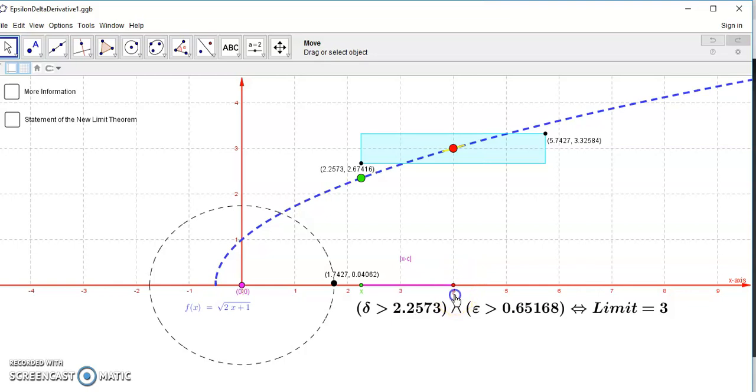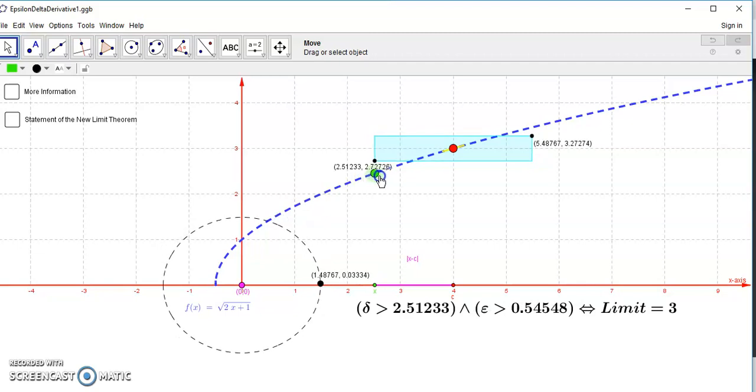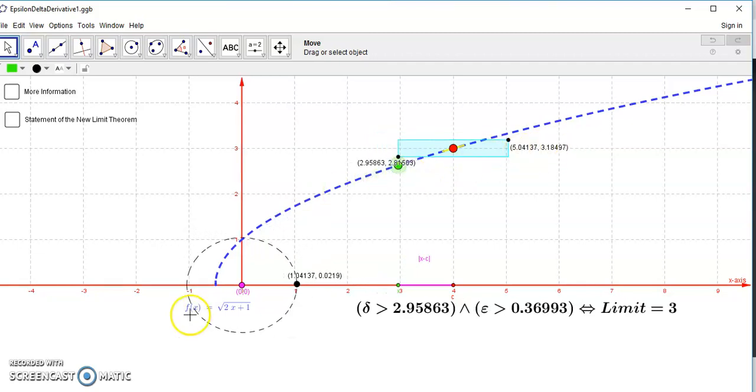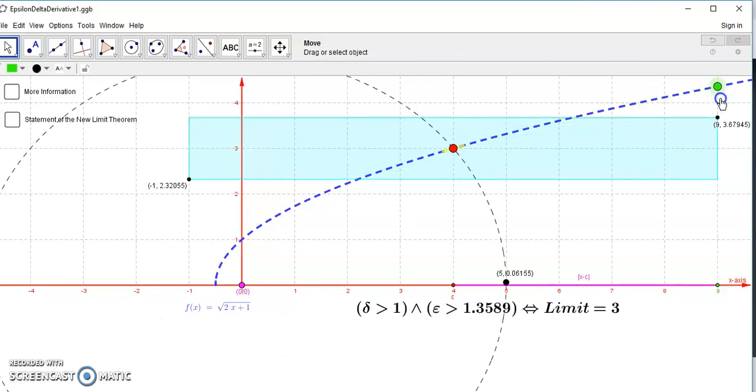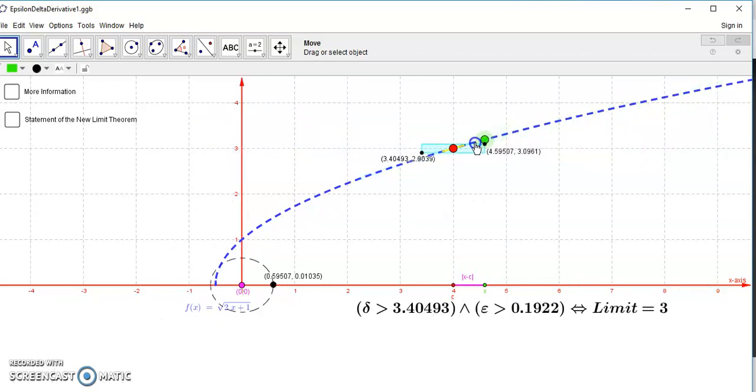This point here is where the limit is supposed to be at X equals 4, and this here is the function 2x root of 2x plus 1. As we approach the point from either side, the area of this circle will diminish. As you move away, the area gets very big, and it doesn't matter what side you are. As you move away, the area will always expand, but when you hit that point, that's when you have that limit.